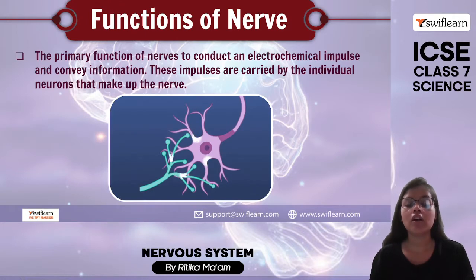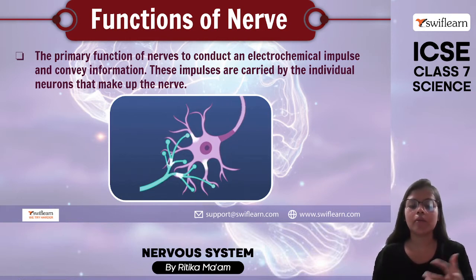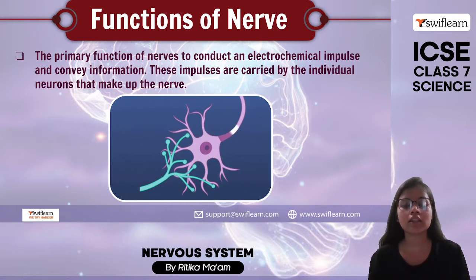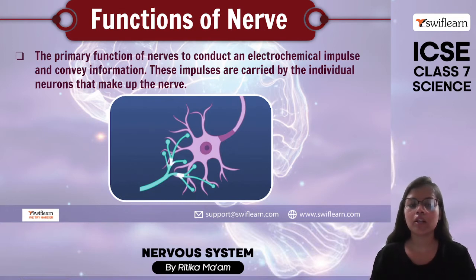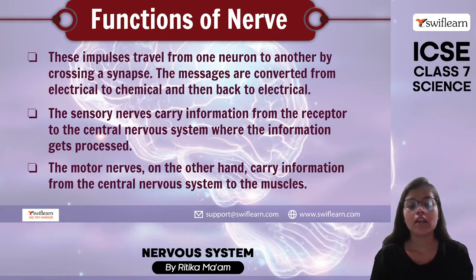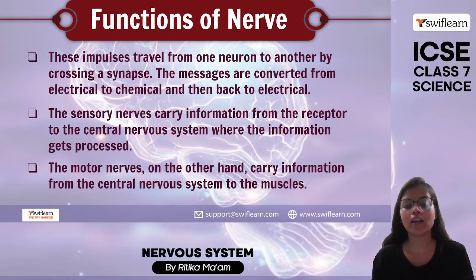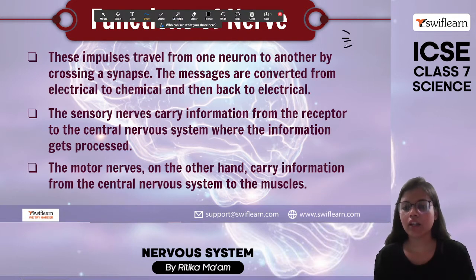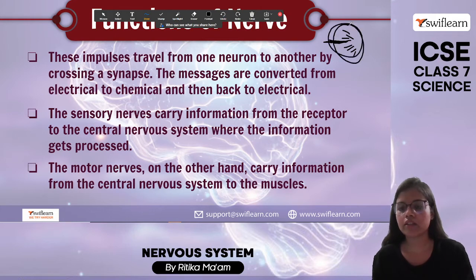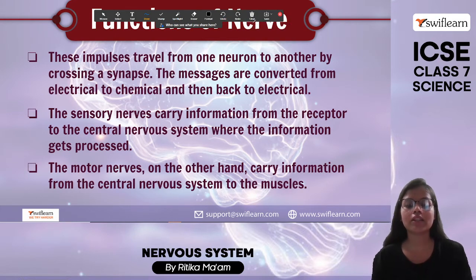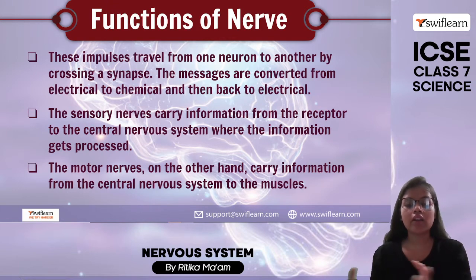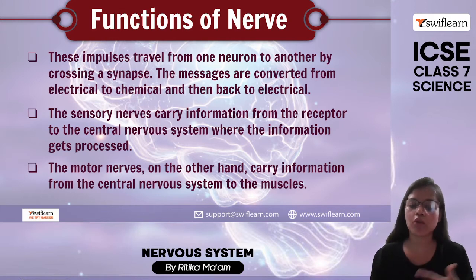The main function of the nerve is to conduct an electrochemical impulse and convey information. The impulses are carried by individual neurons which make up a nerve. These impulses travel from one neuron to another by crossing a synapse — a kind of junction. The messages are converted from electrical to chemical and back to electrical again. Sensory nerves carry information from receptors to the central nervous system where information gets processed, and motor nerves carry information from the central nervous system back to the muscles.